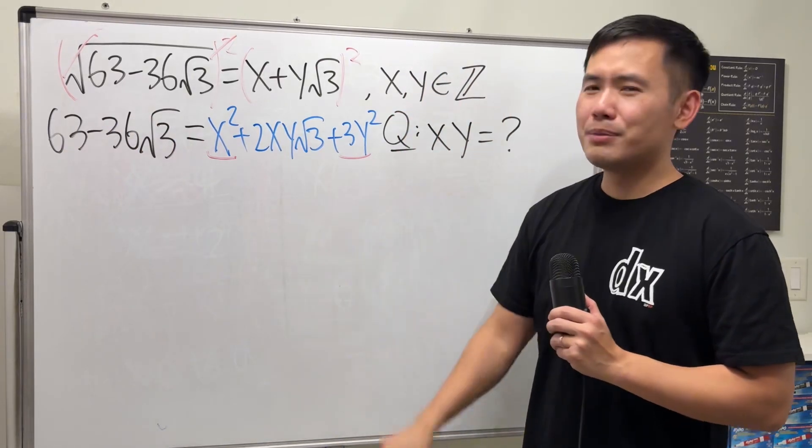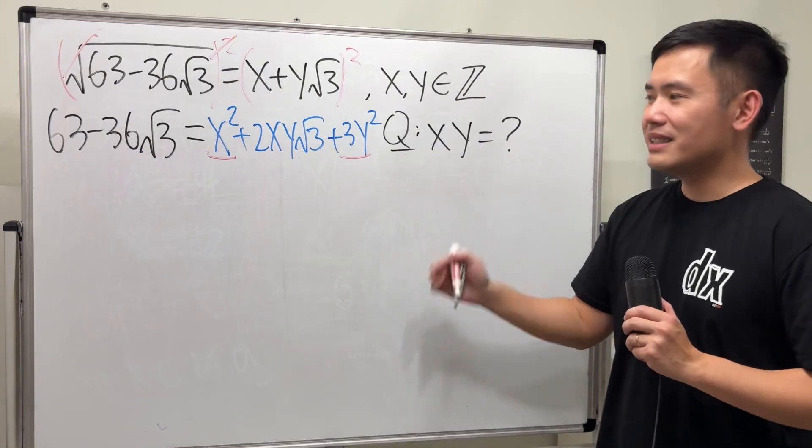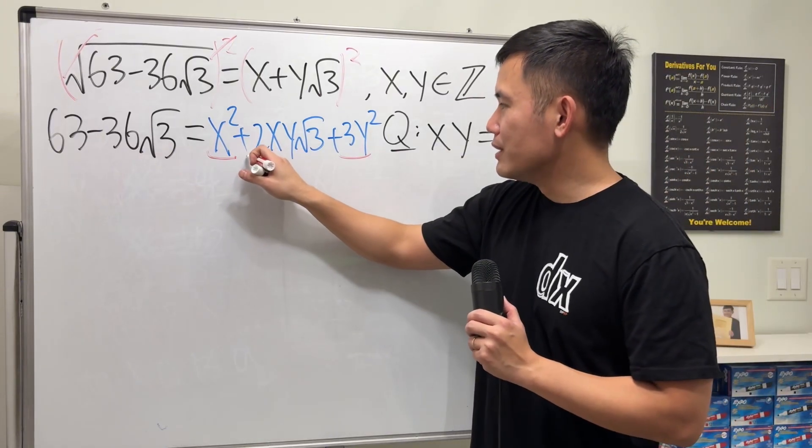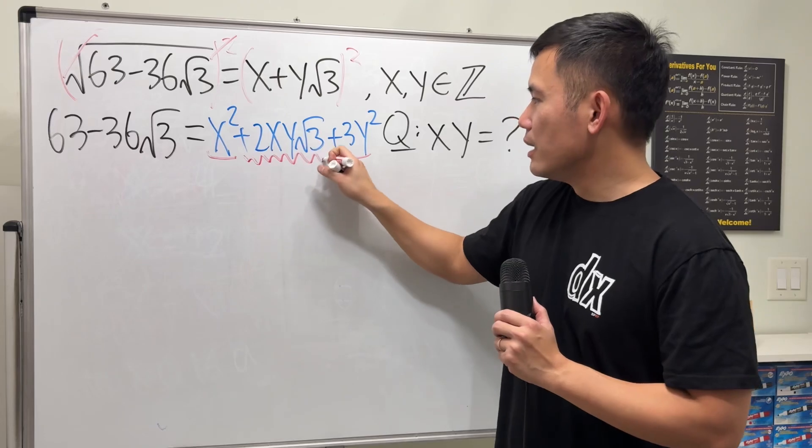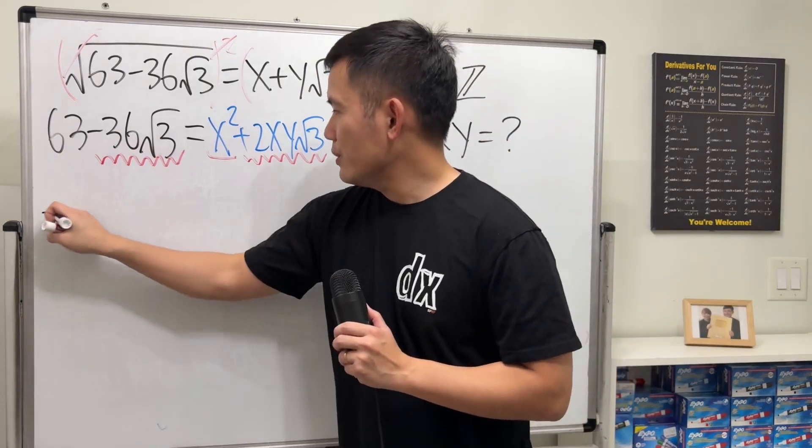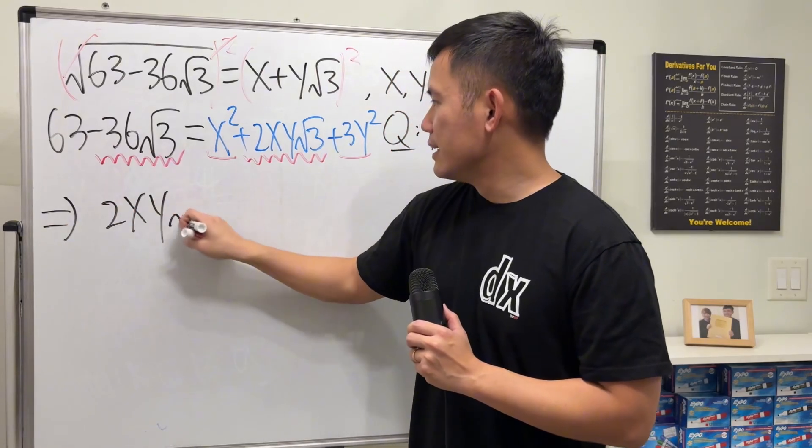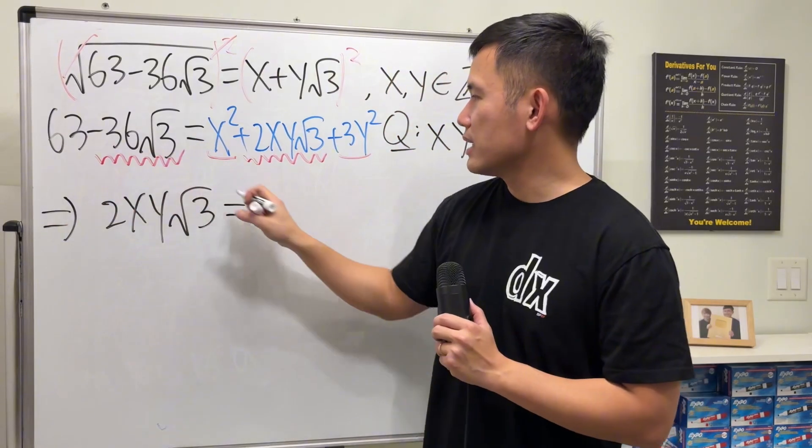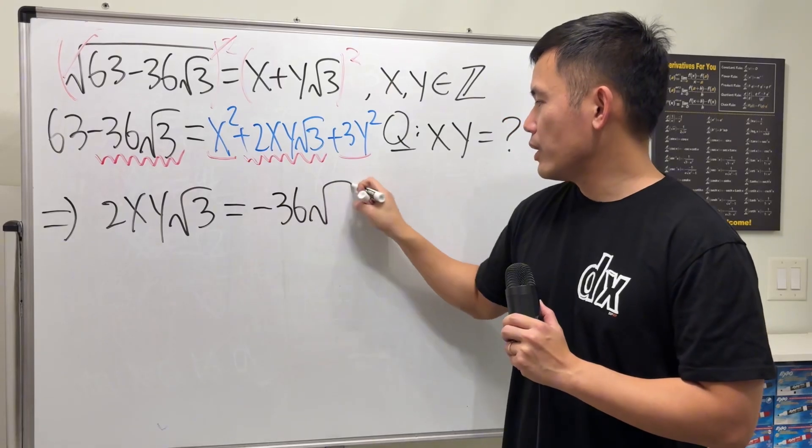But we don't need to care about that because we're trying to find out what x times y is. So all we have to do is put this being equal to that. So we must have 2xy square root of 3 being equal to negative 36 square root of 3.